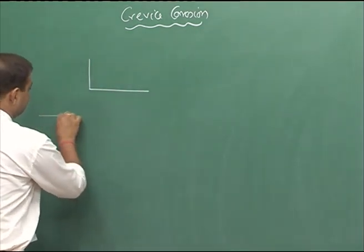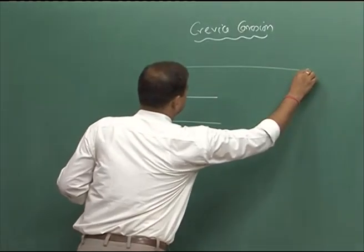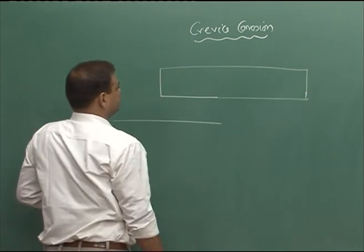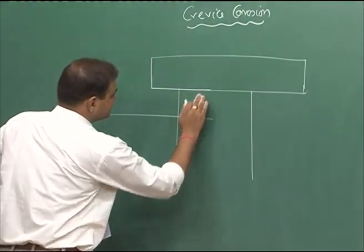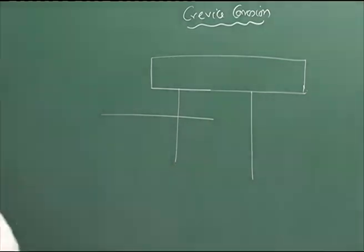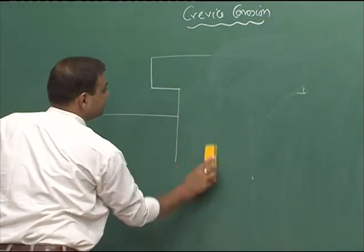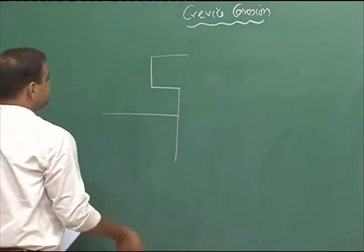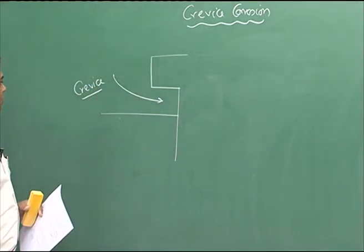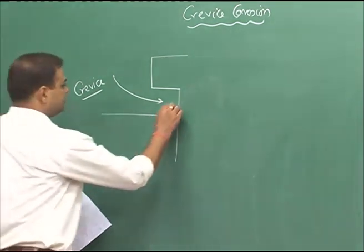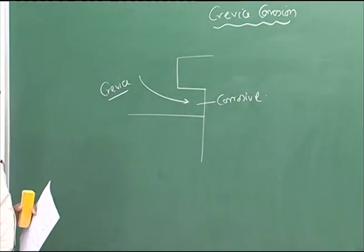Let's say I have a bolt — when you use a bolt, this is my bolt surface, the top part of the bolt. So this is the crevice, a small opening where we have a solution, or corrosive, which is nothing but the electrolyte where corrosion is going on.